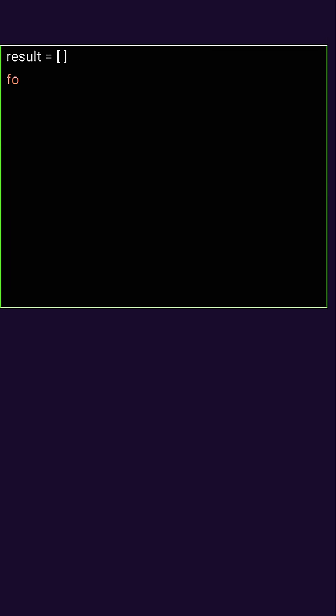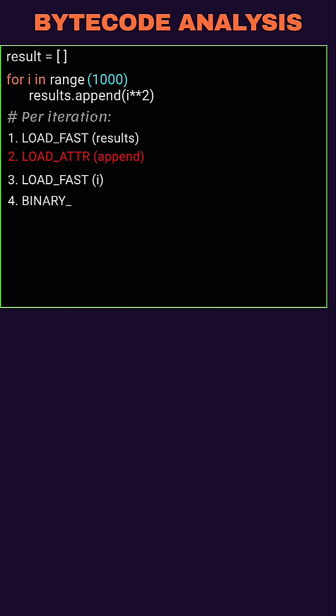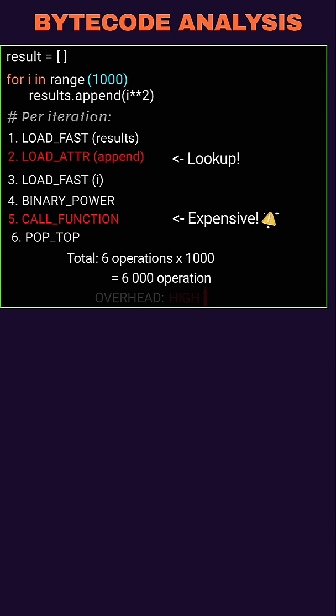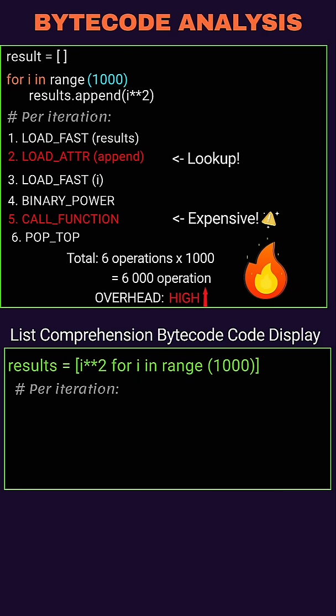When you write a for loop, Python executes load, atcher, and call function for every append. That's two bytecode operations per iteration.